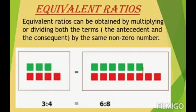The next topic is equivalent ratios. Equivalent ratios can be obtained by multiplying or dividing both terms — the antecedent and the consequent — by the same non-zero number. For example, to find an equivalent ratio of 3:4, we multiply numerator and denominator by 2, giving us 6:8. Similarly, we can find many equivalent ratios to 3:4.